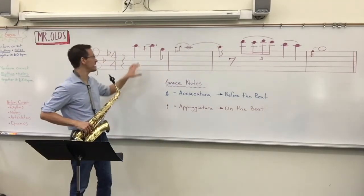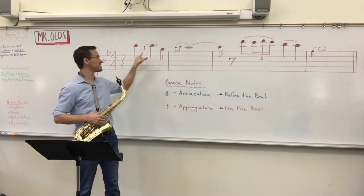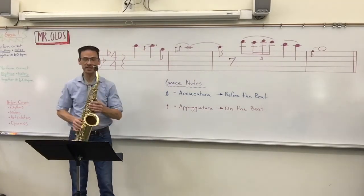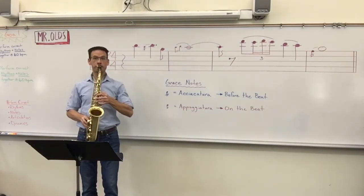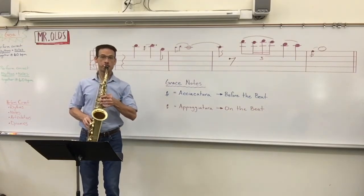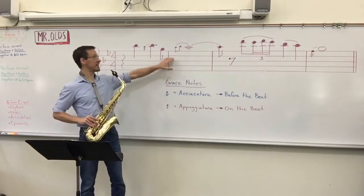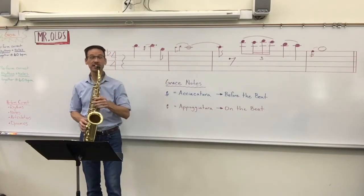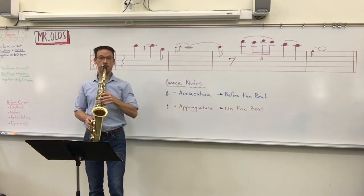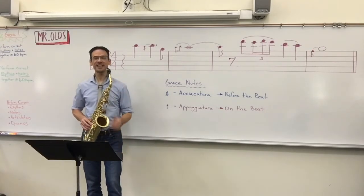So out of context, let's take a look at our first measure. That's going to be an acciaccatura, because it has a slash through the stem right there — so that sounds like this. And then our second measure has an appoggiatura, which is on the beat, and that sounds like this. And then our final measure is an acciaccatura.